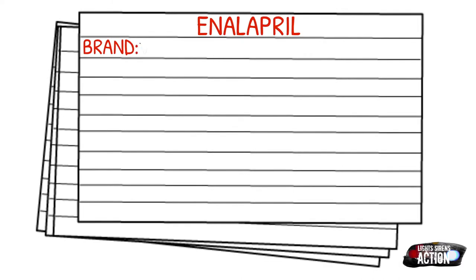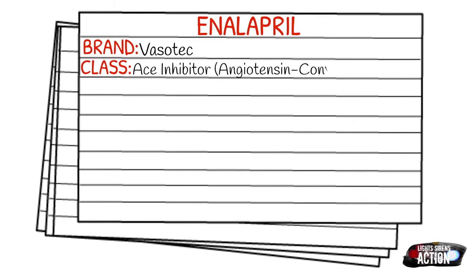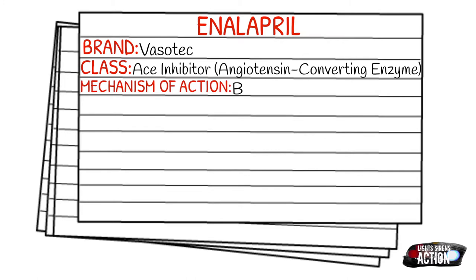Your mechanism of action is that it blocks the conversion of angiotensin 1 to angiotensin 2 in the lungs. Angiotensin 2 causes vasoconstriction and a rise in blood pressure, so by blocking angiotensin 2, we reduce vasoconstriction and reduce blood pressure.